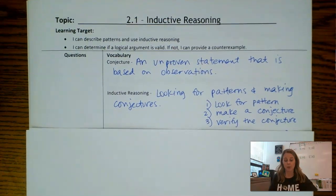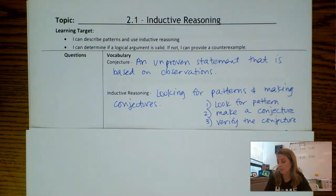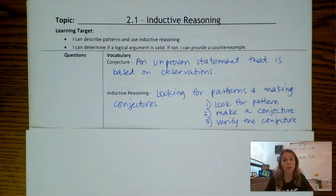Inductive reasoning is the process of looking for patterns and making conjectures. We do this on a daily basis — we notice patterns and we make conjectures or statements about whether that's going to keep happening. I've got one, two, and three listed out because that's the order we logically go through things. Number one, we look for a pattern. Number two, we make a conjecture. And then number three, we verify that conjecture, which could be true, but it may not be true 100% of the time — that's why it's an unproven statement.